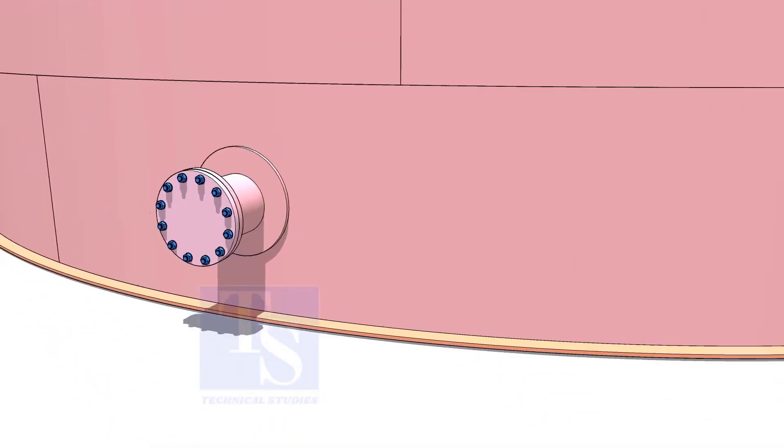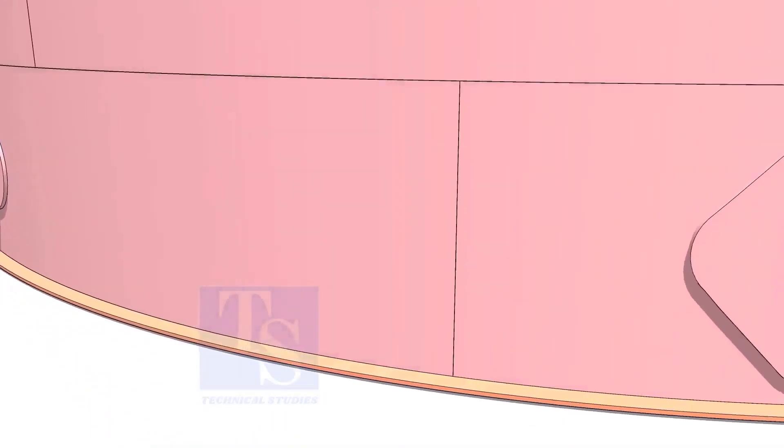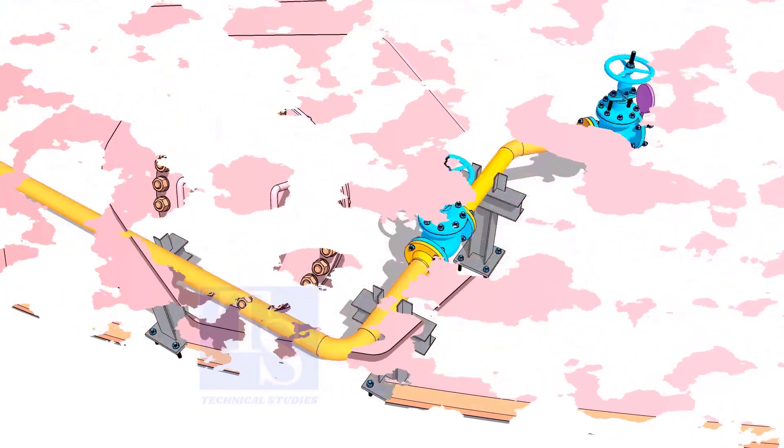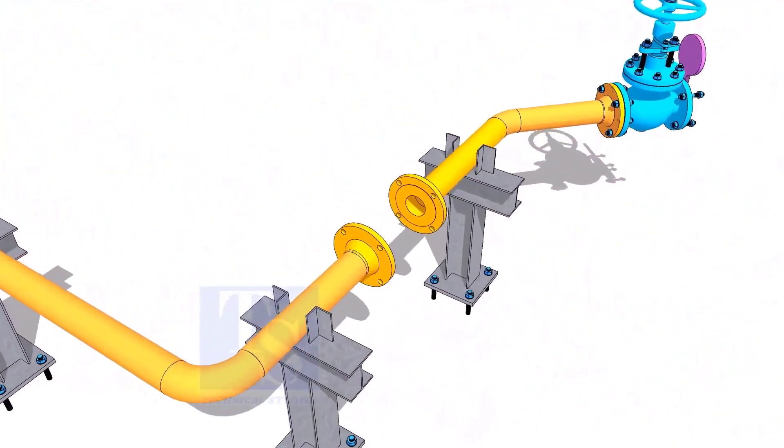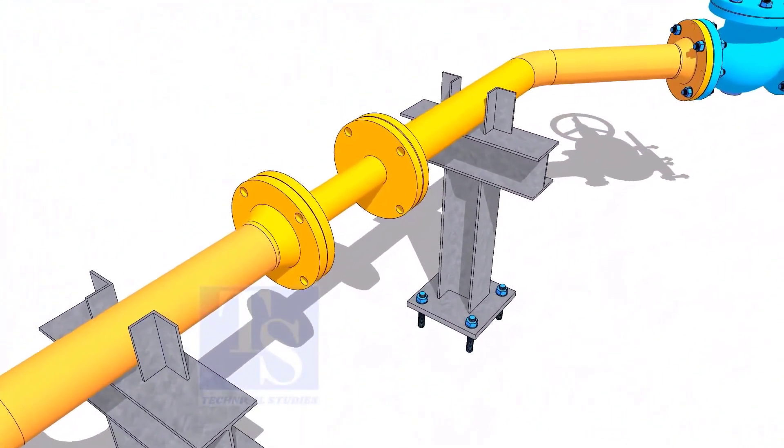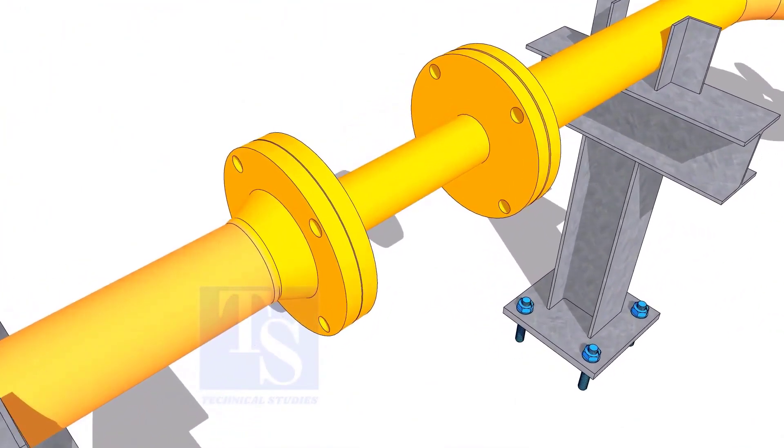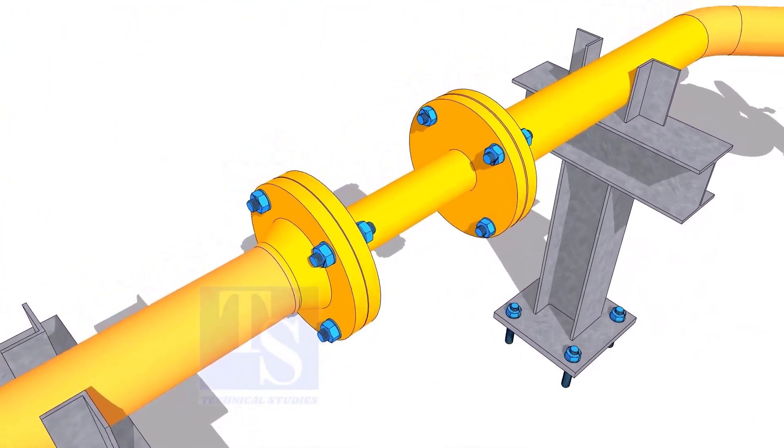Plate flanges are used for low-pressure services or to blind the nozzles of vessels, tanks, etc. for hydrotest purposes. Other use of plate flange is making temporary spools to replace valves and equipment on a piping system.